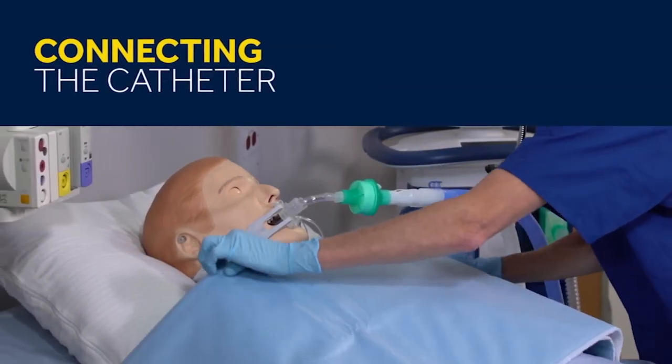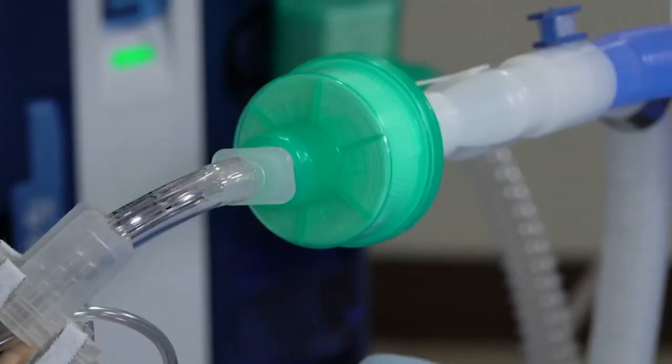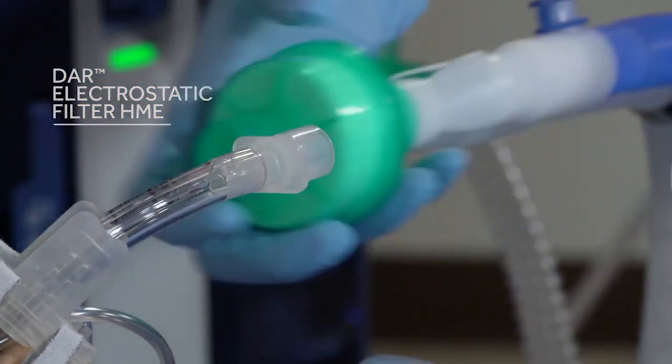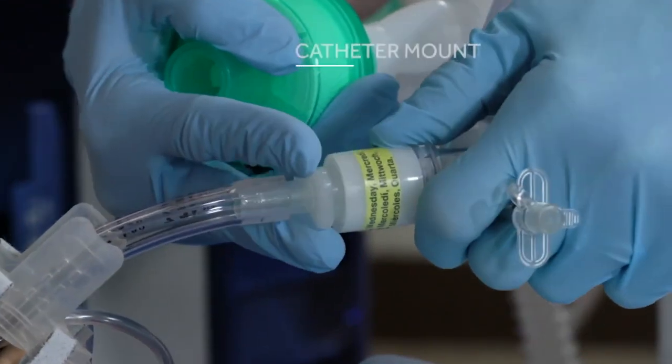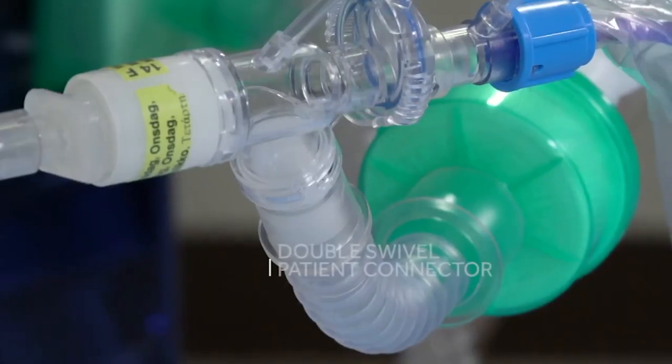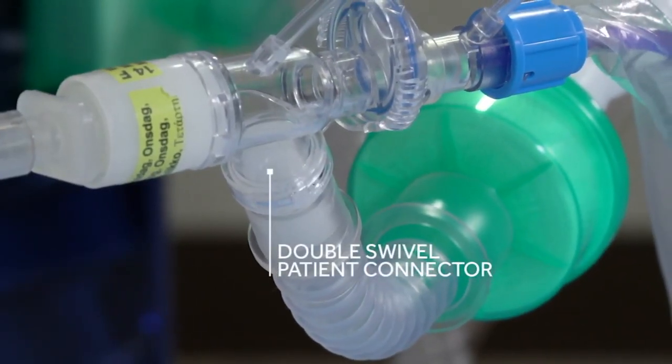You can connect DAR closed suction catheters to a tracheostomy or endotracheal tube and directly into the breathing circuit or DAR electrostatic filter HME. If needed, interpose a catheter mount between the circuit and double swivel elbow. The double swivel patient connector is designed for patient comfort and reduced risk of torque.